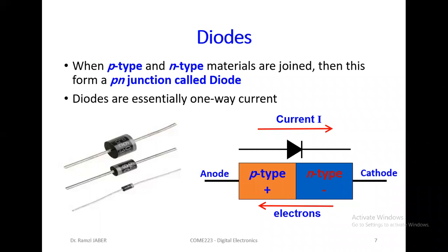We will learn about diodes. What are diodes? When we join P-type and N-type material together, this forms a P-N junction called a diode. When we put N-type silicon with P-type silicon together — N-type means excess minus (electrons), P-type is excess positive (protons) — when we put them together and join them, they form something called a P-N junction. That is a diode.